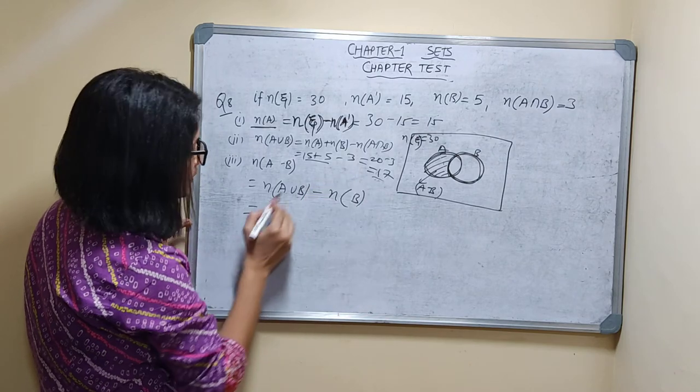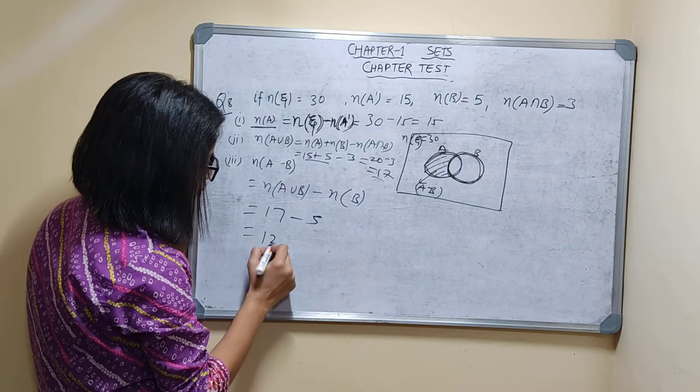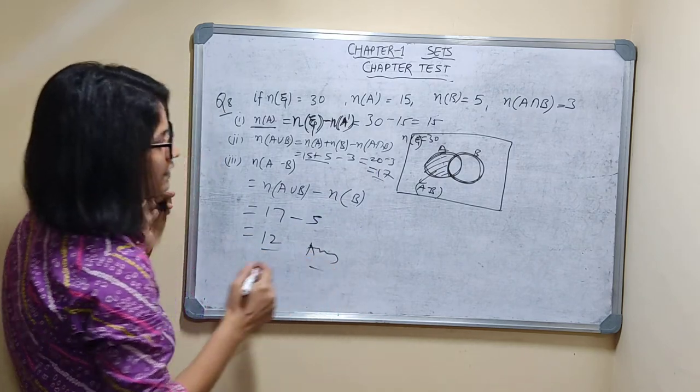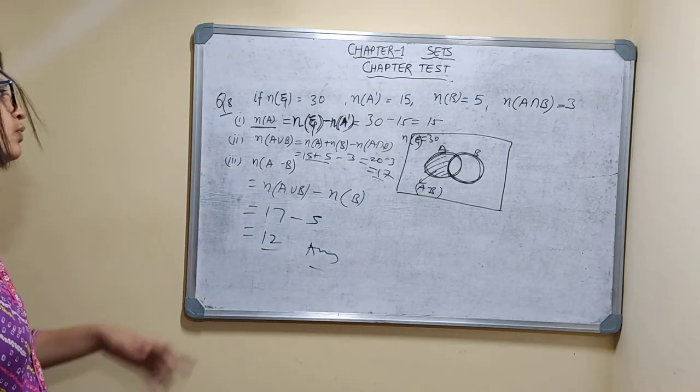N(A∪B) now only we got that is 17 minus n(B) is given 5. So, answer is first answer is 15, second answer is 17, and third answer is 12.